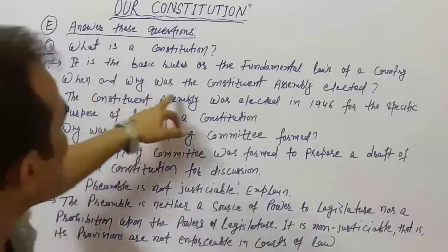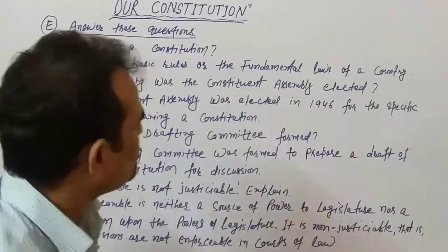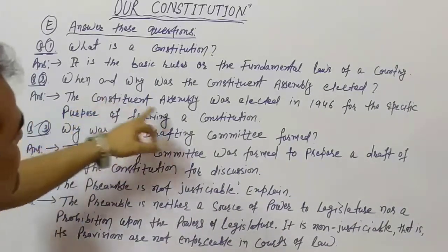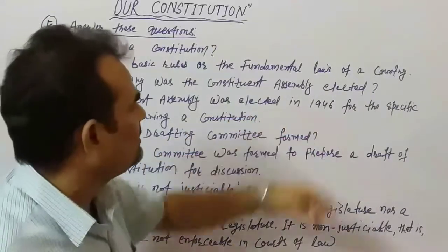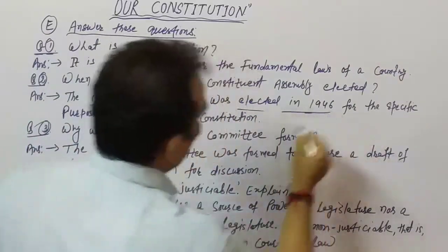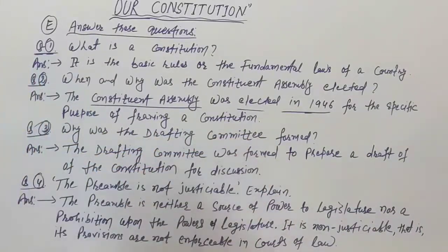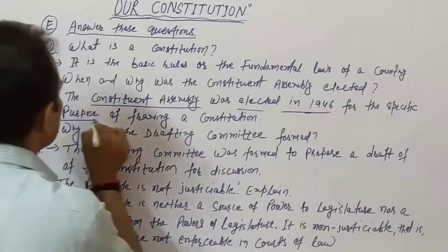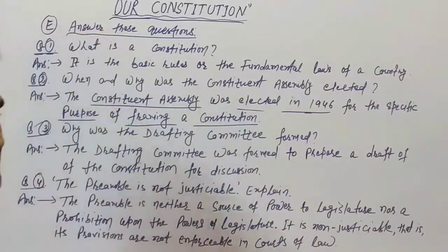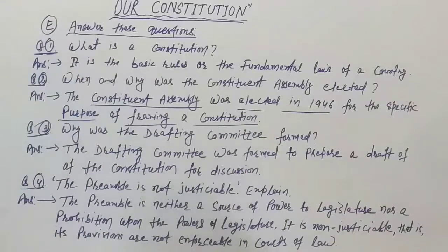Second question: Where and why was the Constituent Assembly elected? The Constituent Assembly was elected in 1946 for the specific purpose of framing the Constitution. This is why the Constituent Assembly was elected.